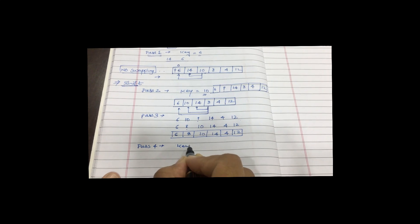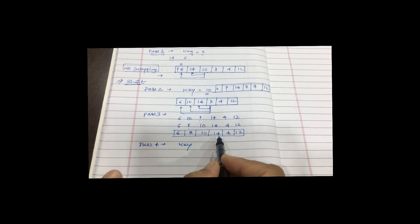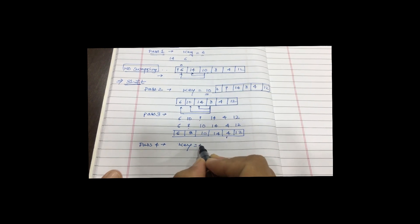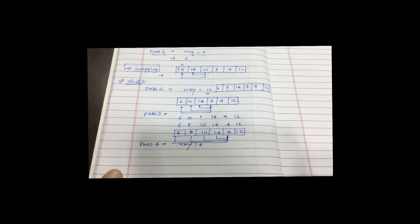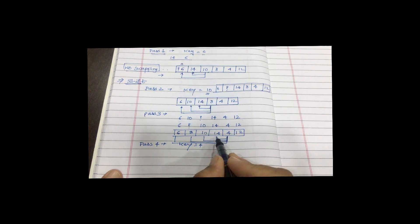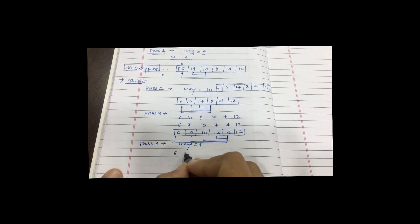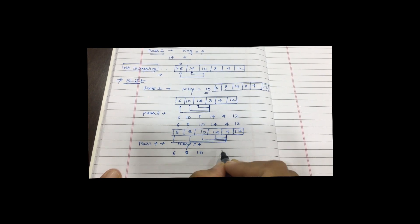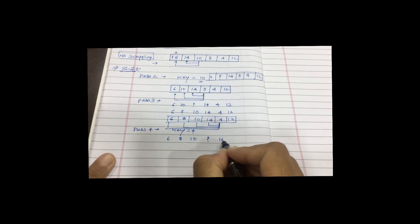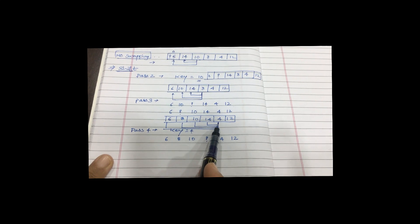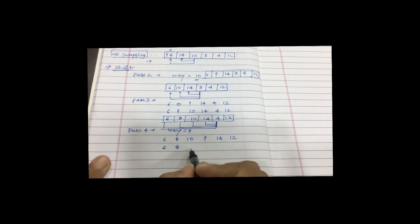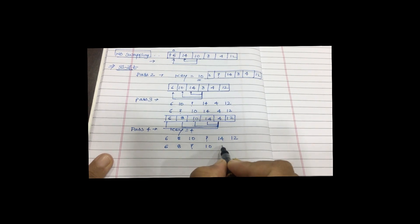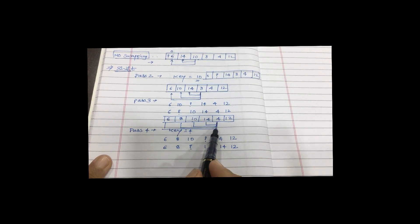For pass 4, the key element is 4. Four comparisons are carried out. First, 4 is compared with 14 — shifting is necessary, position becomes vacant. Then 4 is compared with 10 — 4 is lesser, so shifting is required; array becomes 6, 8, vacant, 10, 14, 12. Then 4 is compared with 8 — shifting is necessary again.